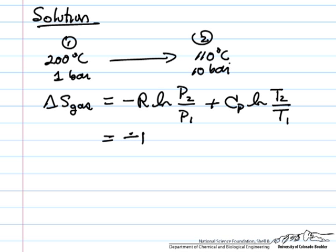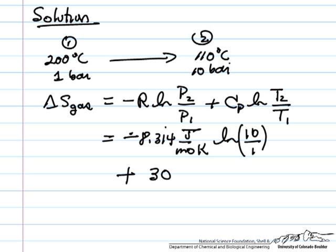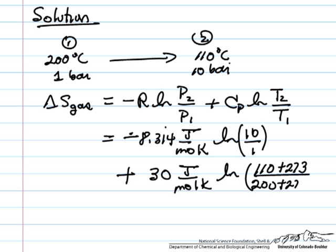So, this is minus 8.314 joules per mol Kelvin for the gas constant, the log of 10 over 1, plus 30, and again the units are joules per mol per Kelvin for the heat capacity, the log of final temperature 110 plus 273 to make it absolute, and initial 200 plus 273.